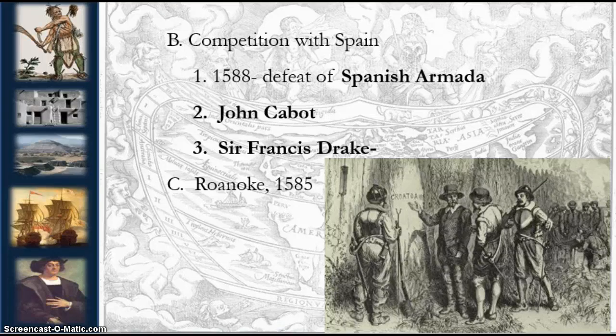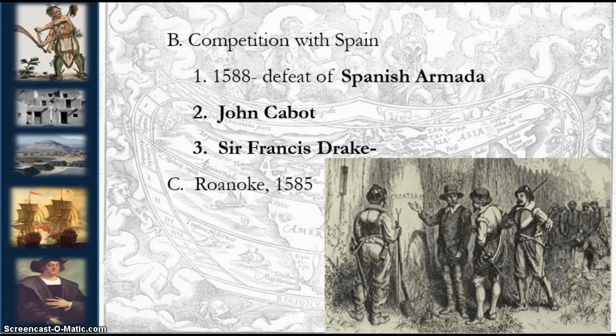English attempts to colonize in the late 16th century got off to a horrendous start. In 1583, Sir Humphrey Gilbert attempted to colonize Newfoundland but died while at sea. The second attempt came at Roanoke in 1585, when Sir Walter Raleigh — Gilbert's half-brother — led 115 men, women, and children to Roanoke Island off the coast of Virginia, and they, as legend has it, mysteriously vanished.